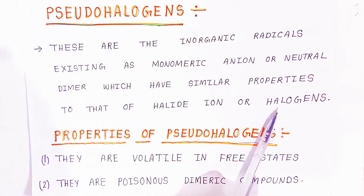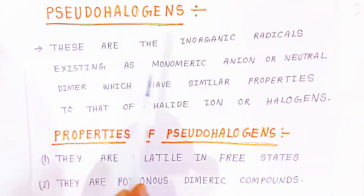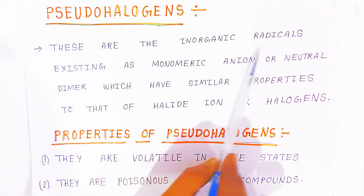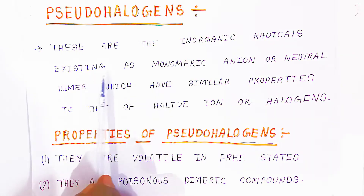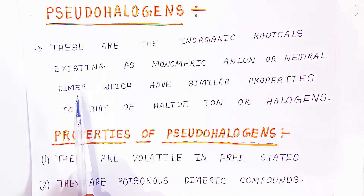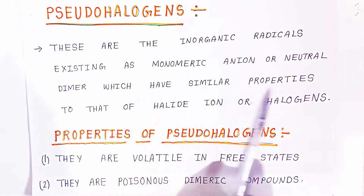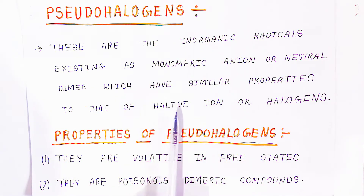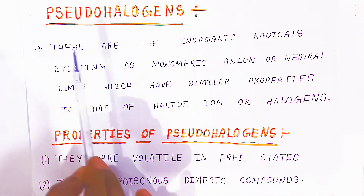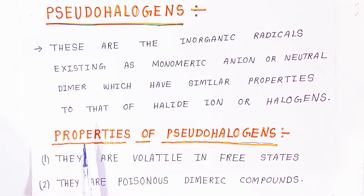It is asked in examinations: what are the pseudo halogens? You have to write: these are the inorganic radicals existing as monomeric anions or neutral dimers which have similar properties like halide ions and halogens, but they are not actual halogens. That is why it is called pseudo halogens.